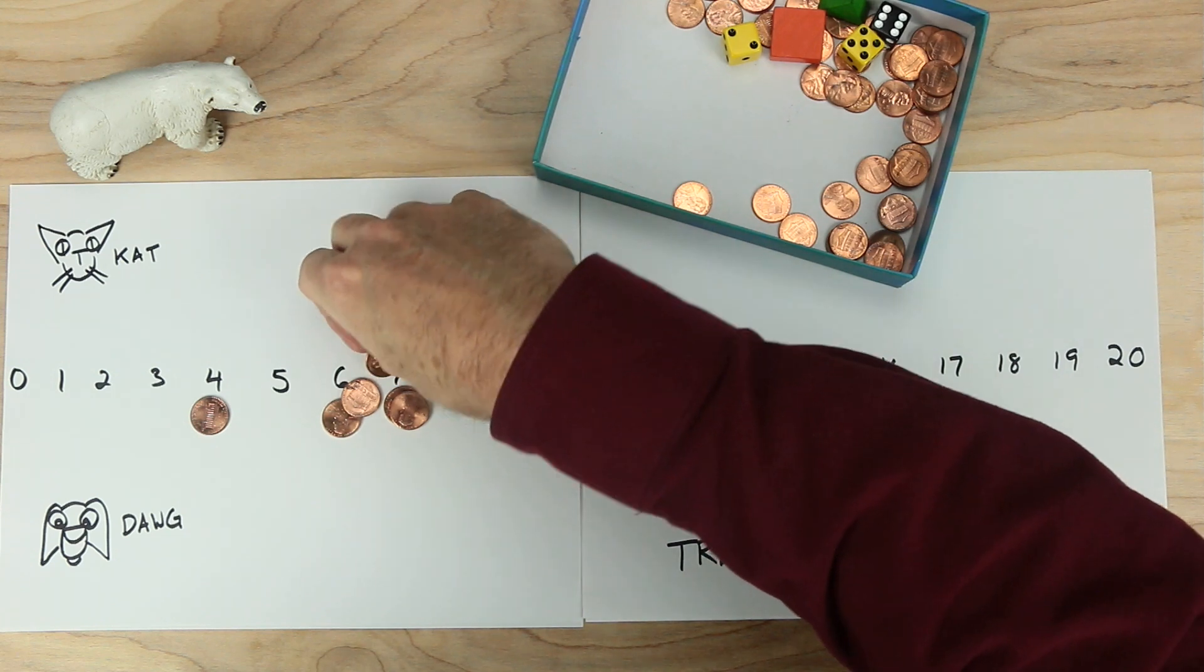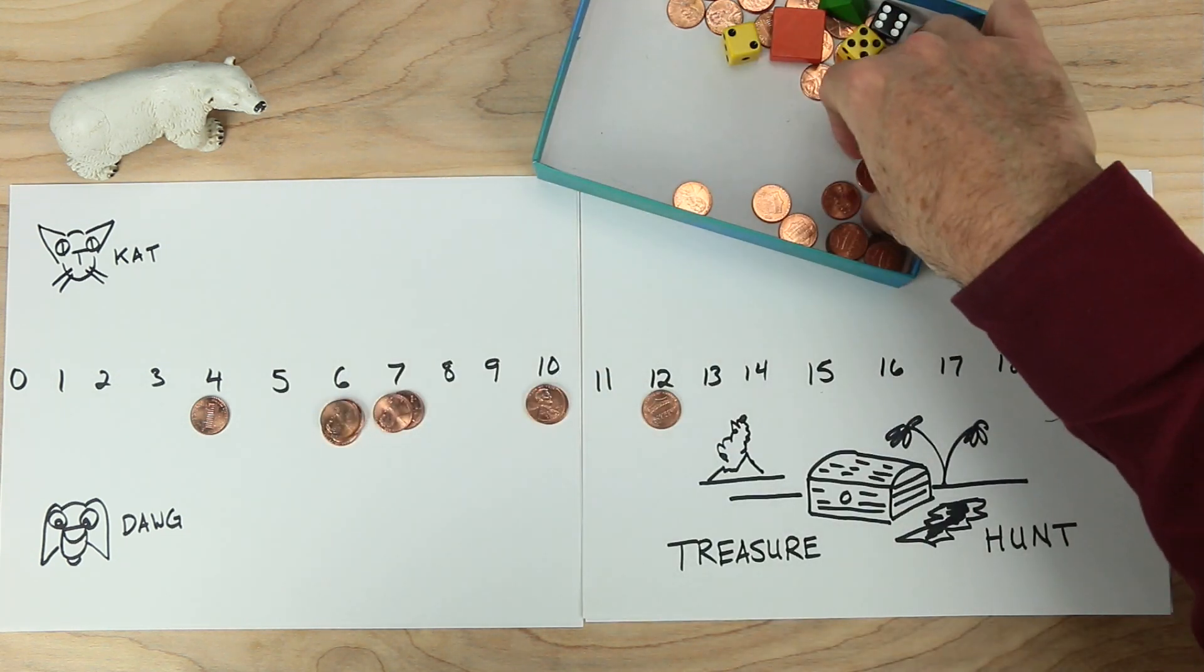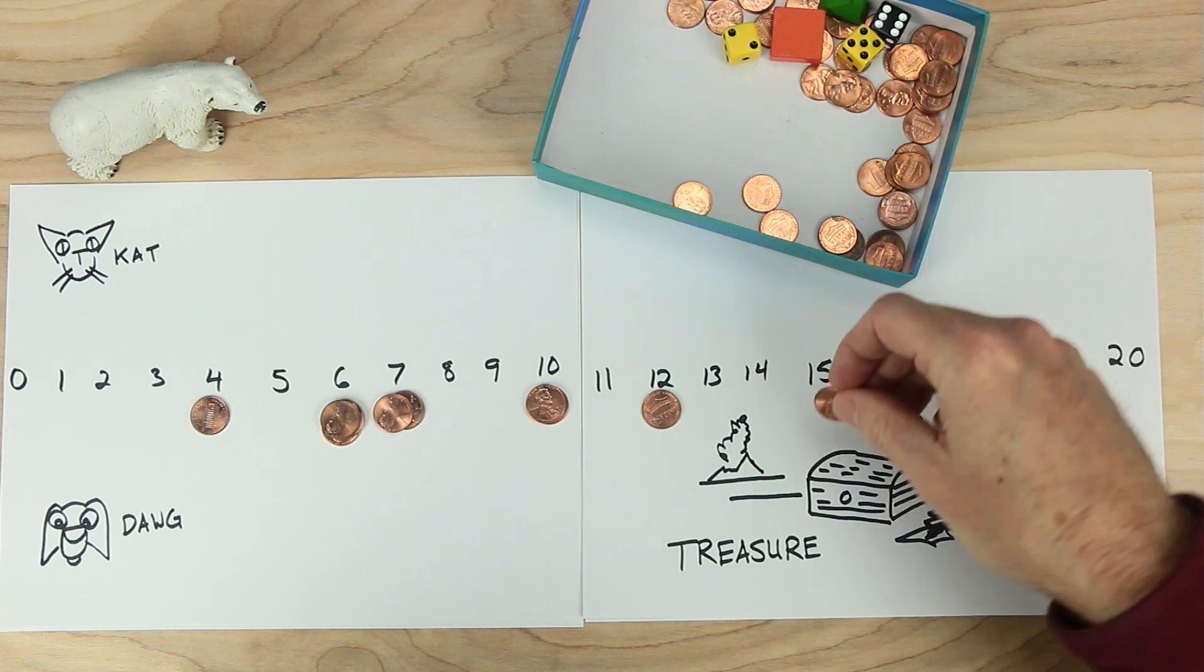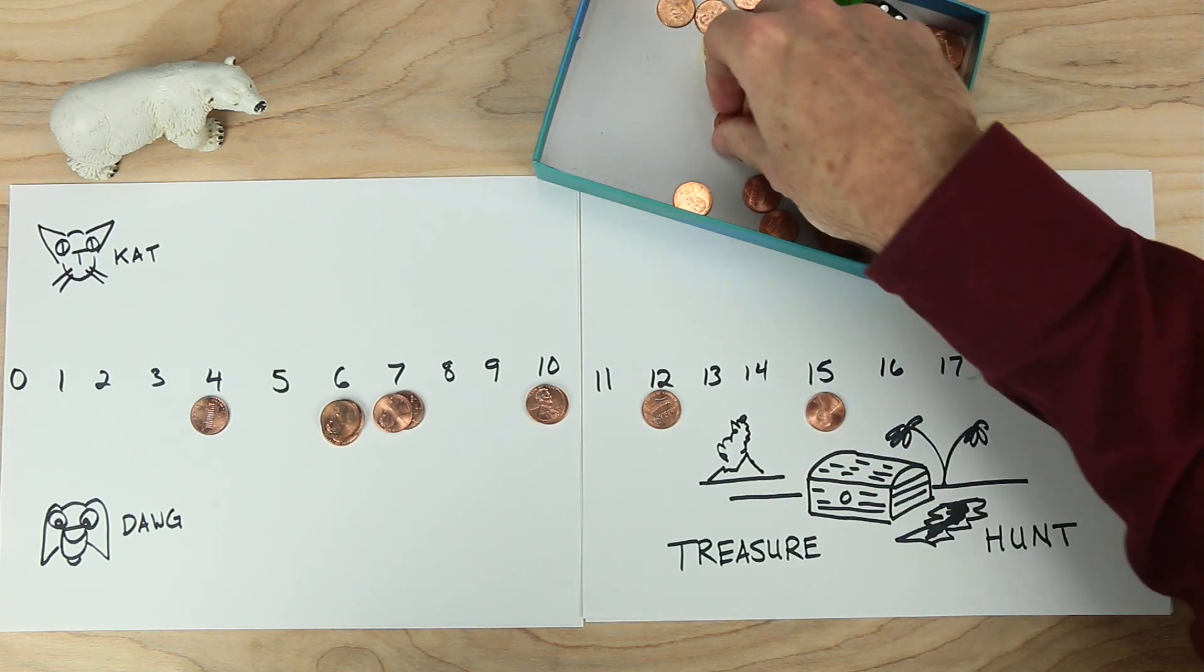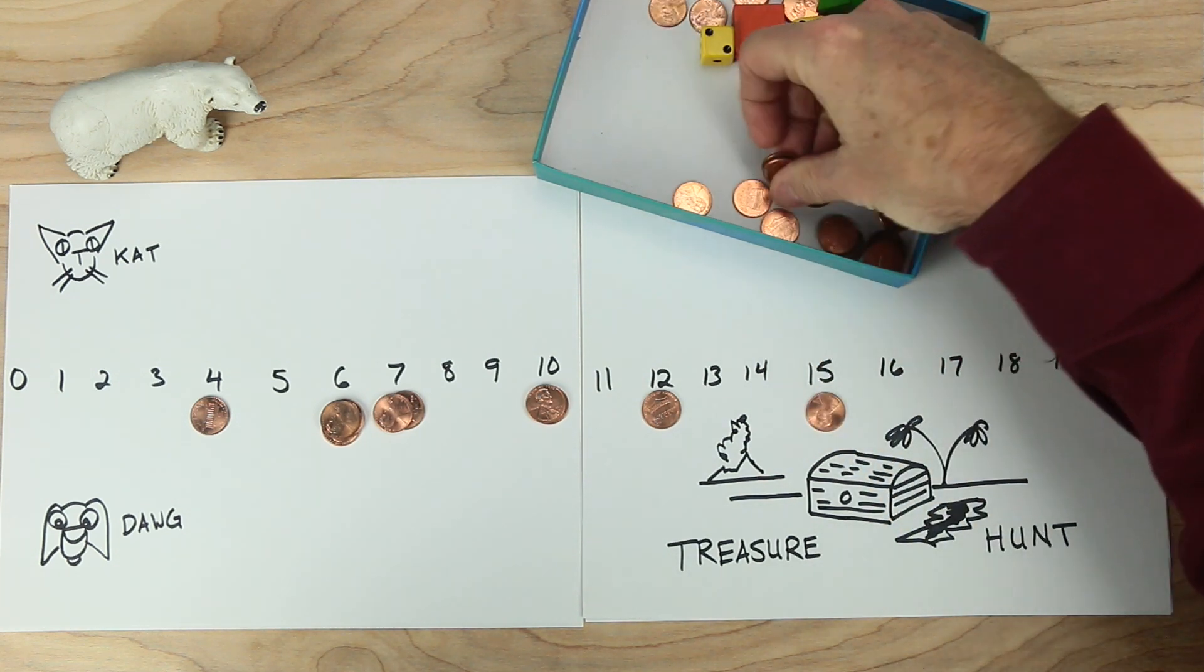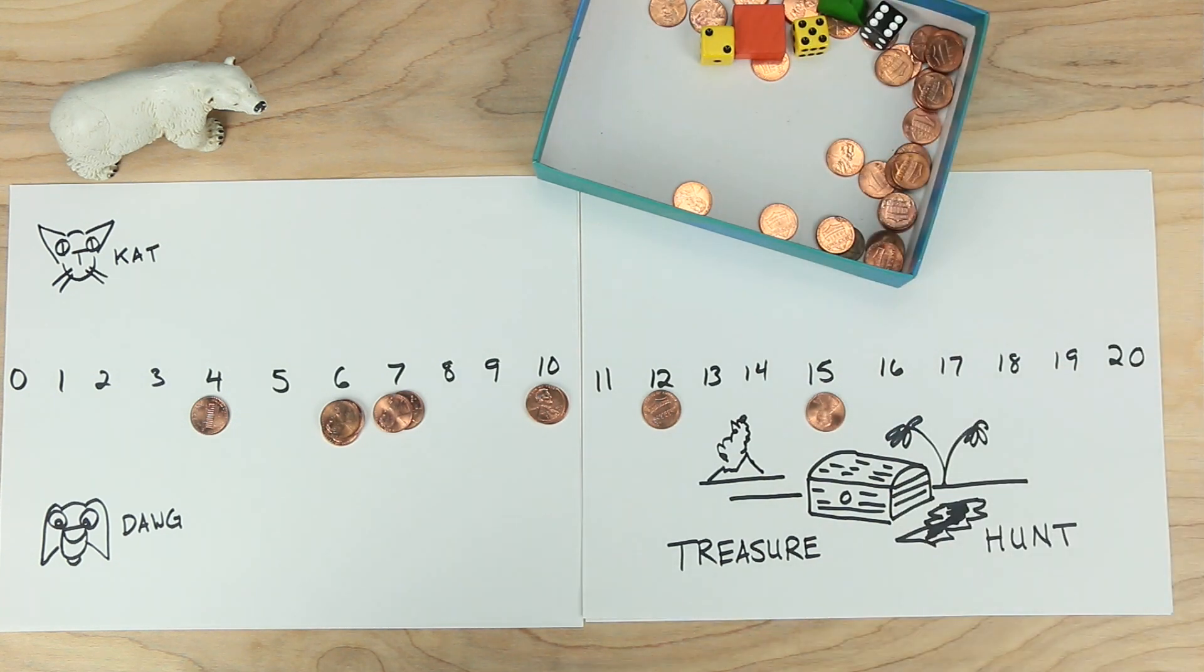Let's put three pieces of treasure for the number six. That's a lot of treasure for the number six. Let's go ahead and put one piece of treasure for 15. And let's put something special at the very end. Let's put five pieces of treasure for the number 17.